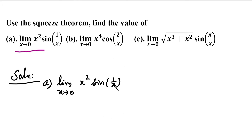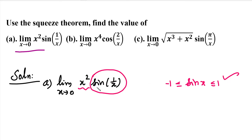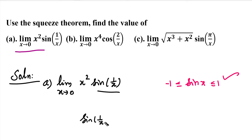Whenever we use the Squeeze Theorem, the question will have a function involving sin or cos. Along with that, there will be other functions. No problem — all these types of problems we solve using the Squeeze Theorem. The main inequality we use is the range of sin or cos. As everyone knows, the value of sin(x) lies between minus 1 and plus 1, meaning it is always between these two values or equal to them.